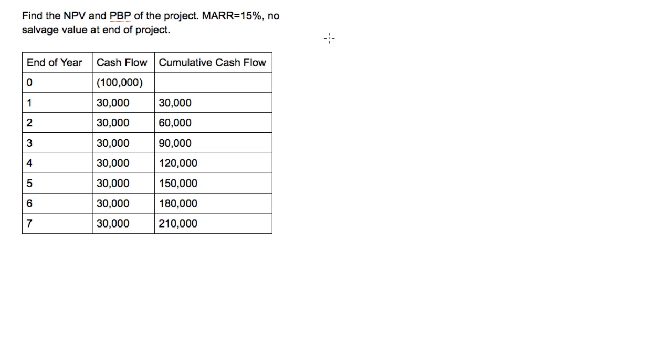Let's do the payback period first. If you recall from the last video, we're trying to make back this $100,000. Obviously it's going to come somewhere after the end of year three, but somewhere before the end of year four.